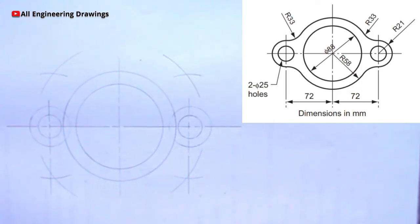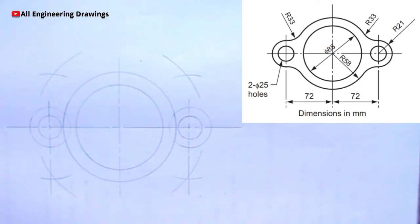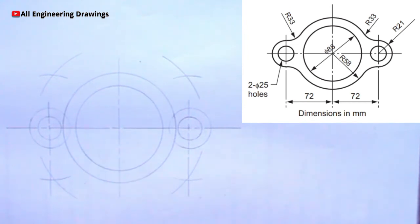The point where the arcs intersect is the center of our tangential arc. So I will adjust my compass to a radius of 33mm — our tangential arc has a radius of 33mm. Then I will place my compass on the point where the arcs intersect and produce the tangential arc.